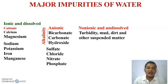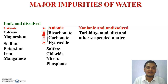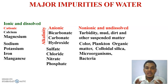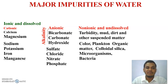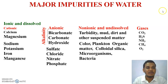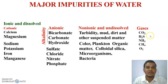Non-ionic and undissolved impurities mostly include turbidity, mud, dirt particles, and other suspended matter. They also include colour, plankton, organic matter, colloidal silica, microorganisms, and bacteria. Gaseous impurities include dissolved gases such as carbon dioxide, hydrogen sulfide, ammonia, methane, and oxygen.